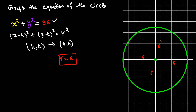If the center is not at the origin but at some point (H, K) — for example, (1, 3) — then plot that center point first and then go 6 units in each direction from that center to draw the circle.